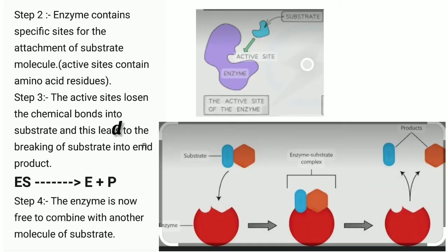Step 2. Enzyme contains specific sites for the attachment of substrate molecule. Active sites contain amino acid residues. Which means that enzyme molecule has specific sites.